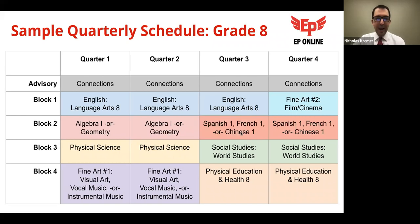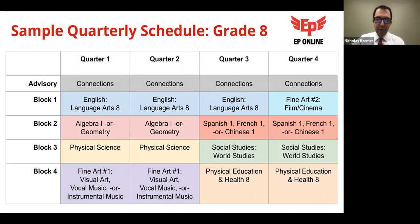In eighth grade, there's a slight transition — math becomes a normal two-quarter block course since these are where students start taking high school credit courses following the same format as high school. Options include Algebra 1 or Geometry. During the other half of the year, students begin their first high school world language course, choosing from Spanish 1, French 1, or Chinese 1. Science becomes Physical Science and social studies becomes World Studies.